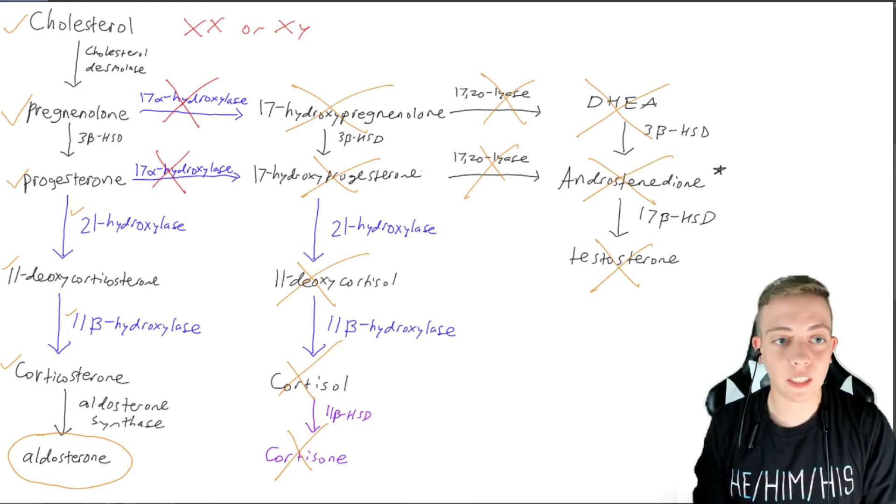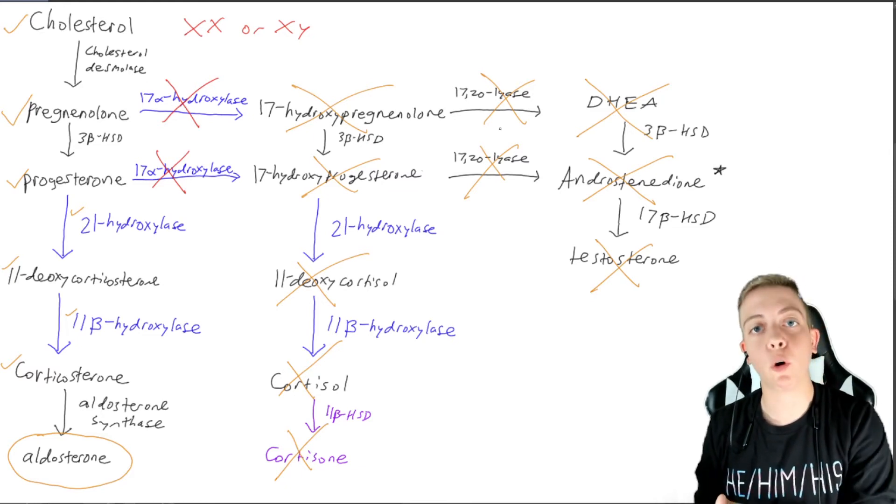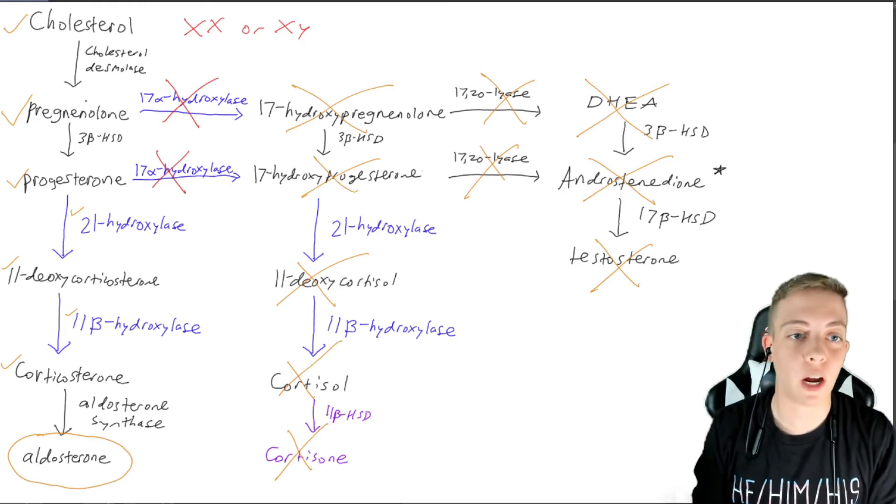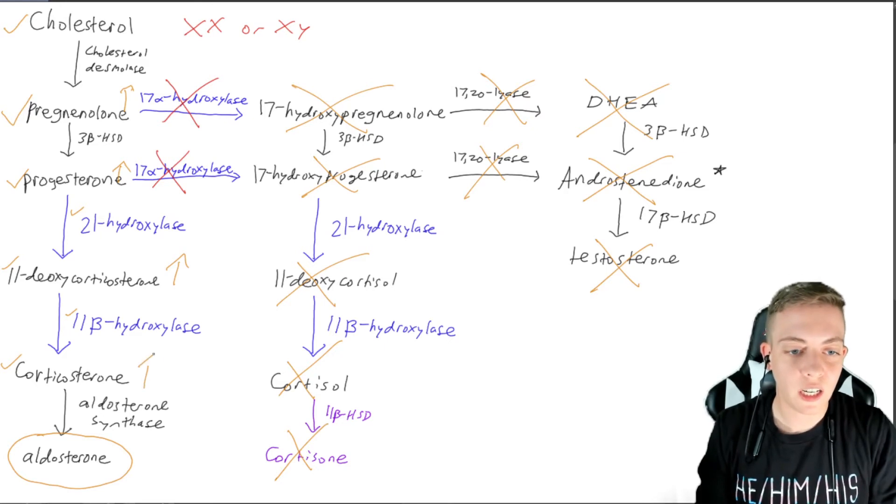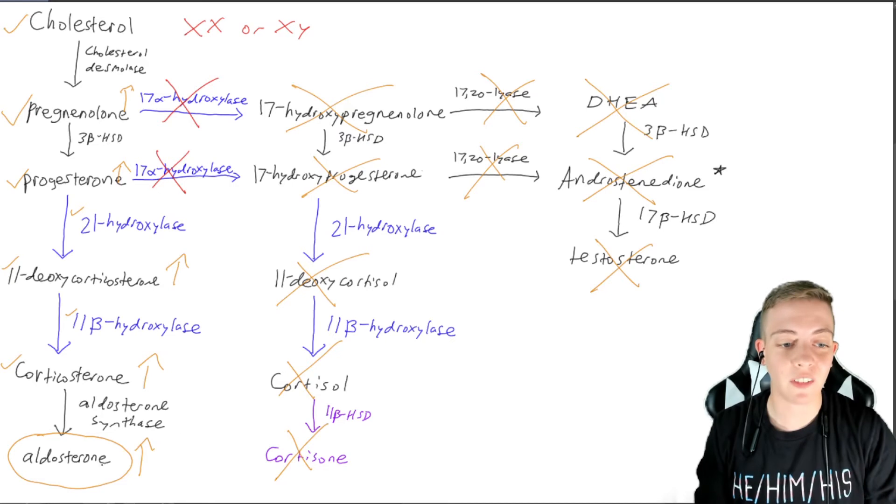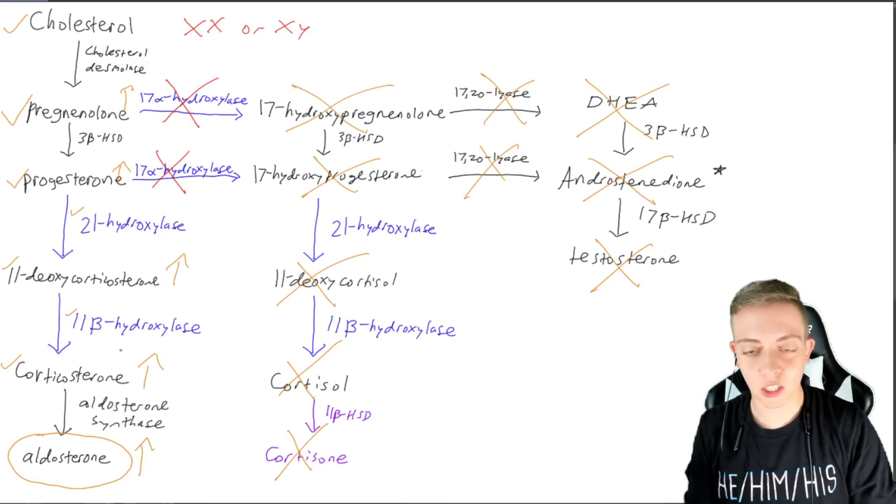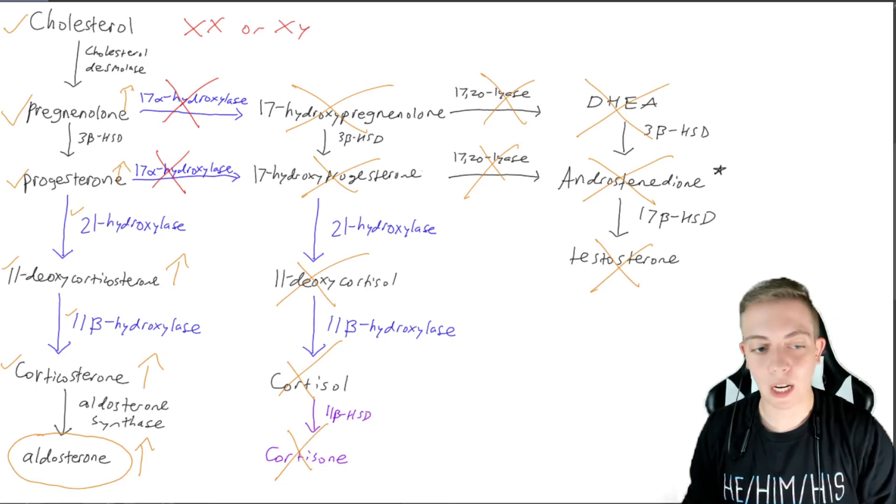So as you can see, we have no cortisol and we have no androgens from this pathway. But as all of this is going to back up because we can't go forward, so now we have to go backwards. So now we're going to have increased pregnenolone, increased progesterone, increased 11-deoxycorticosterone, increased corticosterone, and increased aldosterone. So we're going to have a lot of aldosterone. And if you remember what aldosterone does, you will be able to figure out how this presents.